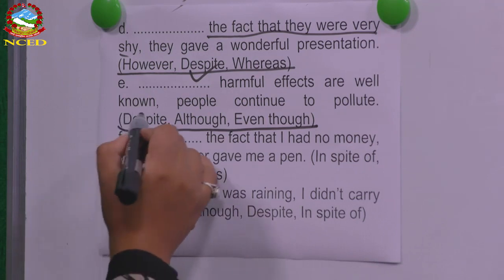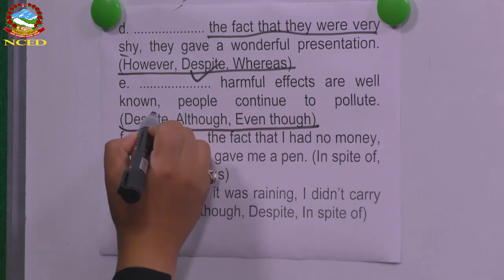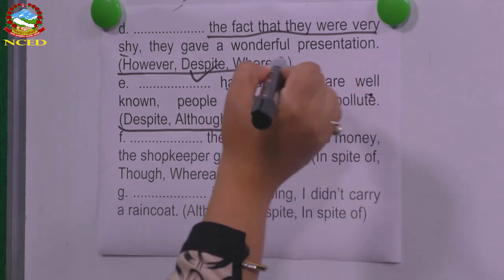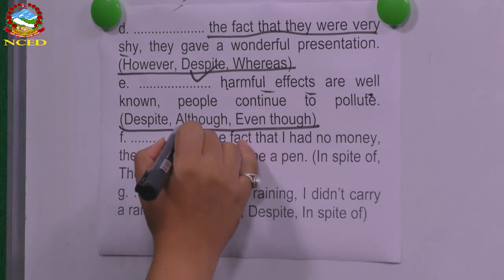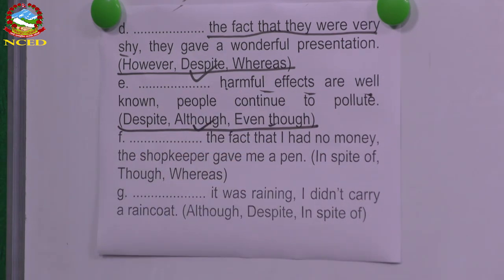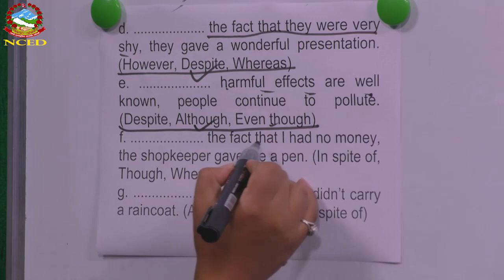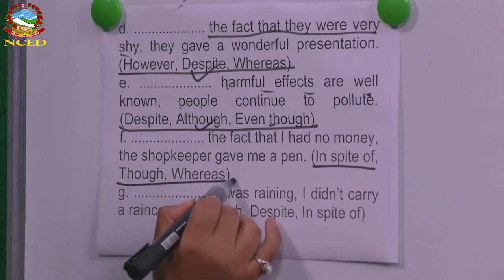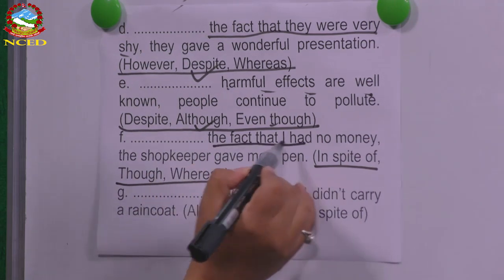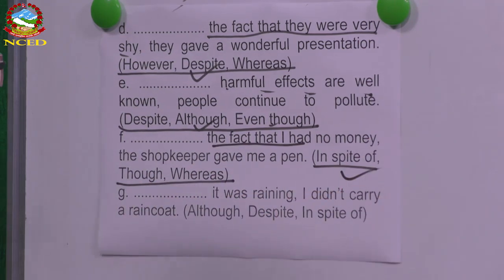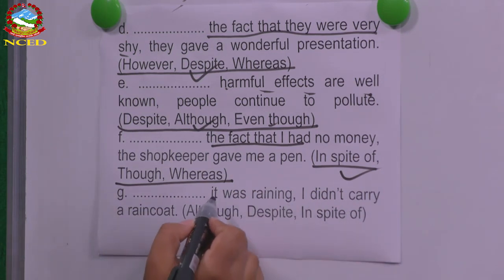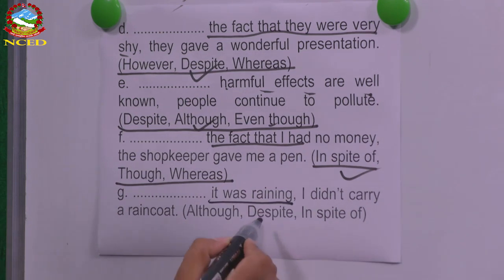Number E: the options are 'despite,' 'although,' and 'even though.' 'Harmful effects are well known; people continue to pollute.' There is a clause, so we use either 'although' or 'even though' — both are right. Number F: 'The fact that I had no money, the shopkeeper gave me a pen.' The options include 'in spite of,' 'though,' and 'where.' 'The fact that' is the phrase, so use 'in spite of.' The next sentence has a clause, so use 'although.'